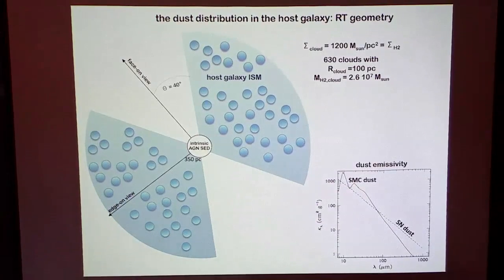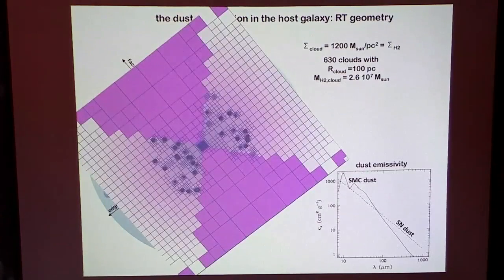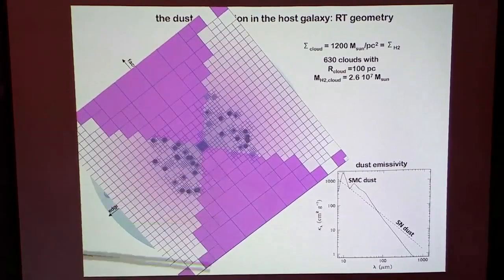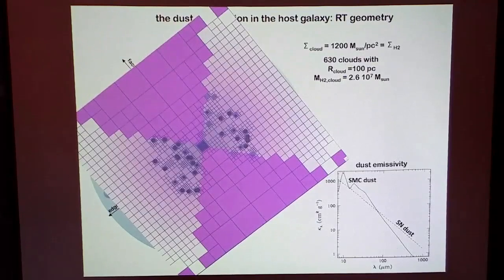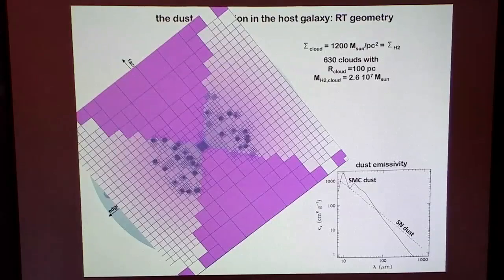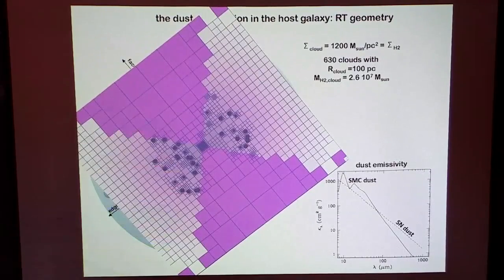Then we run the radiative transfer. The clouds are very large — more than 2.7 times 10^7 solar masses per cloud, much larger than a typical GMC. This is consistent with what they find from the CO observations — we were quite surprised as well, and talked with Dominic Rikers who confirmed this is what comes out of their modeling.